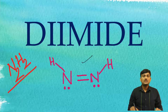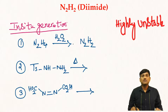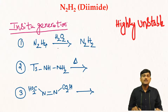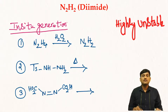This is the structure of diazene. Diazene is a highly unstable molecule at room temperature, so there is a need for in-situ generation of diazene. Diazene can be generated by using hydrazine. When you treat hydrazine with hydrogen peroxide, there is a removal of two hydrogens from the hydrazine and there is a formation of diazene.